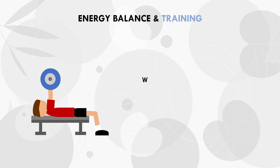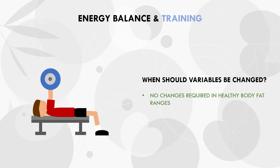For the most part, these variables probably don't need to be adjusted when we are in a relatively lean and healthy body fat range — around 10 to 20% for males and around 18 to 28% for females. Training will probably look pretty similar whether in a surplus, deficit, or at maintenance. However, when we start going outside these relatively healthy ranges — dieting below them or massing above them — that's when some training variables may require adjustments. There are two primary variables that may need manipulation in these specific cases.